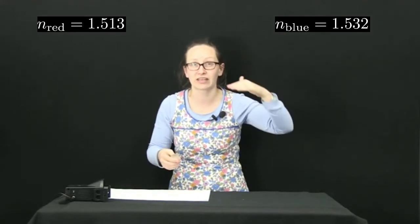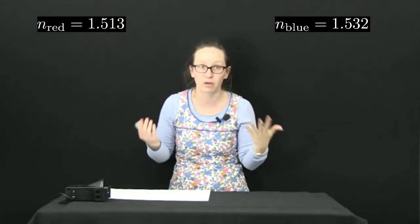And so according to Snell's Law, as we've got different refractive indices, we would expect these different colors of light to be bent a different amount. So because n1 on n2 is different, we would expect sin θ2 on sin θ1 to be different.